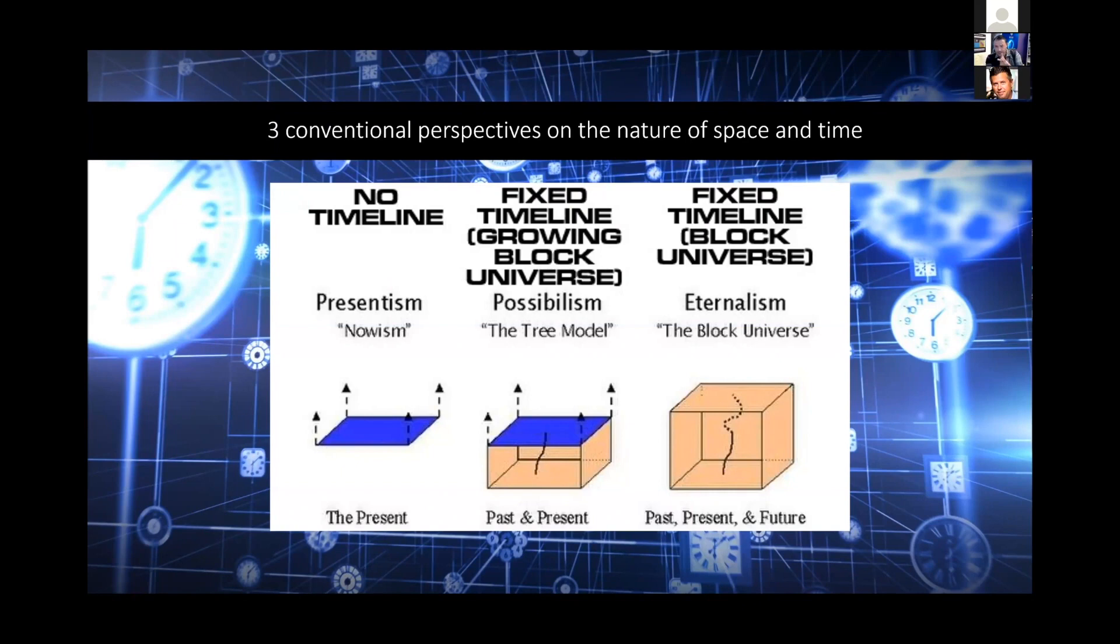Well, general relativity showed us that this is wrong, demonstrably wrong, because depending on your frame of reference—whether you're in an inertial or non-inertial system, an accelerating or non-accelerating system—what you perceive as the past will be different from someone in a different frame of reference. So the future to one observer can be your past simultaneously.